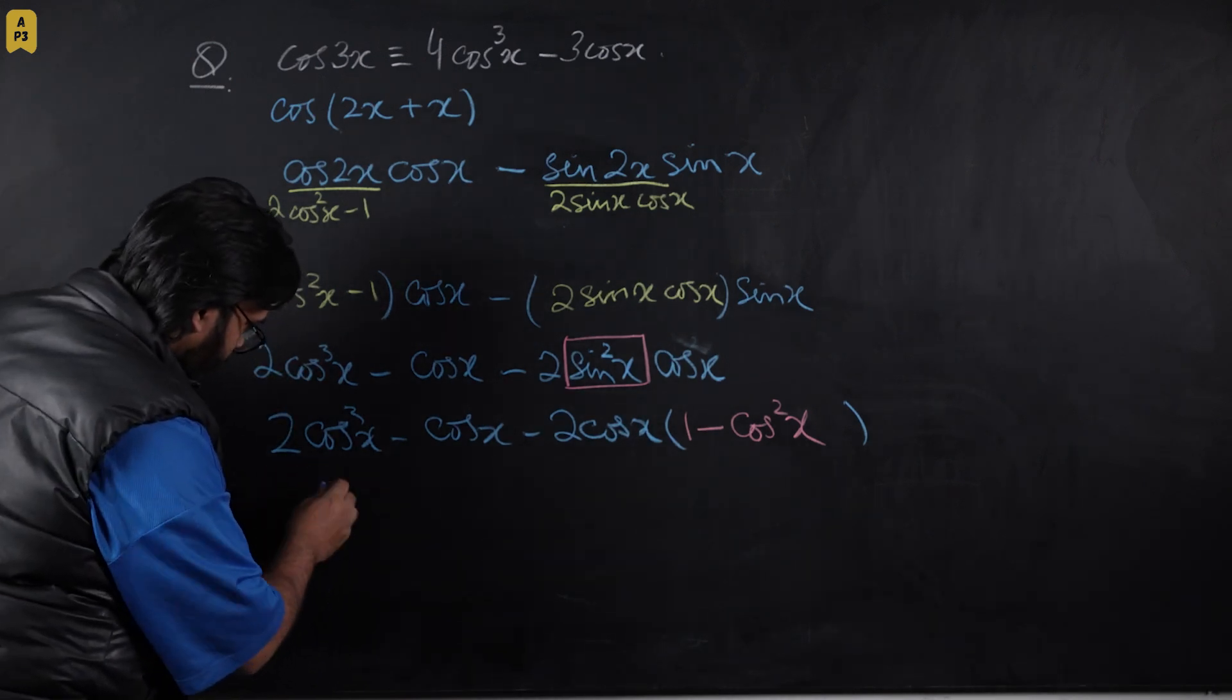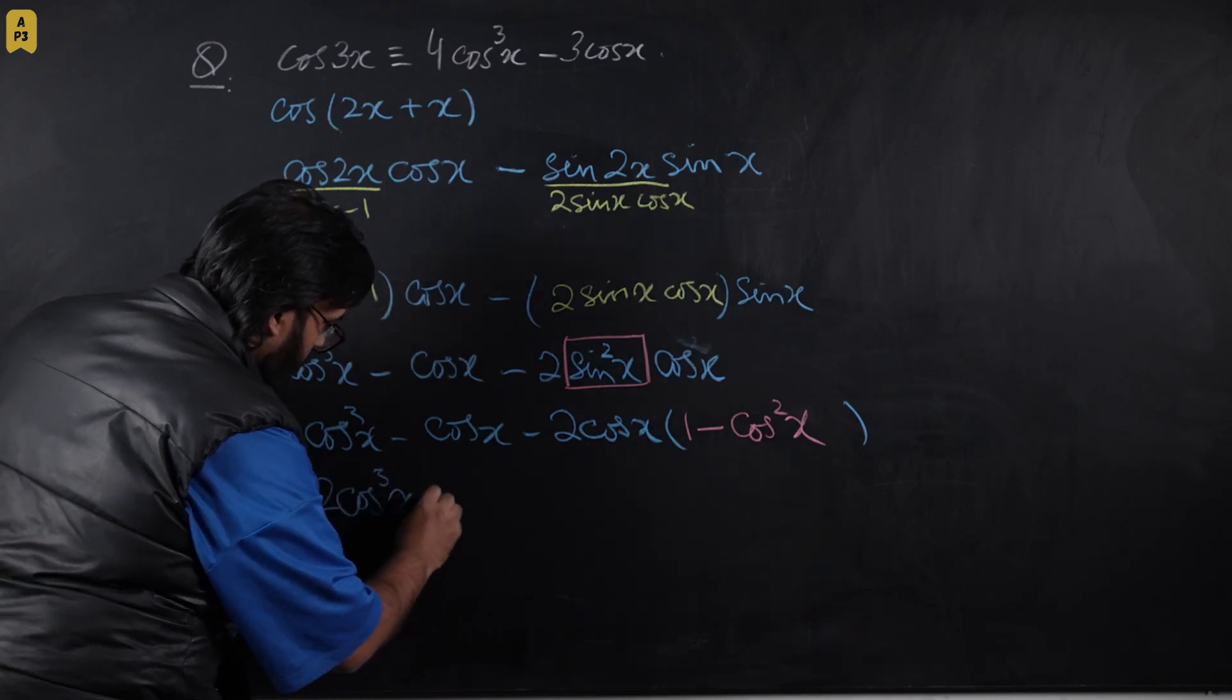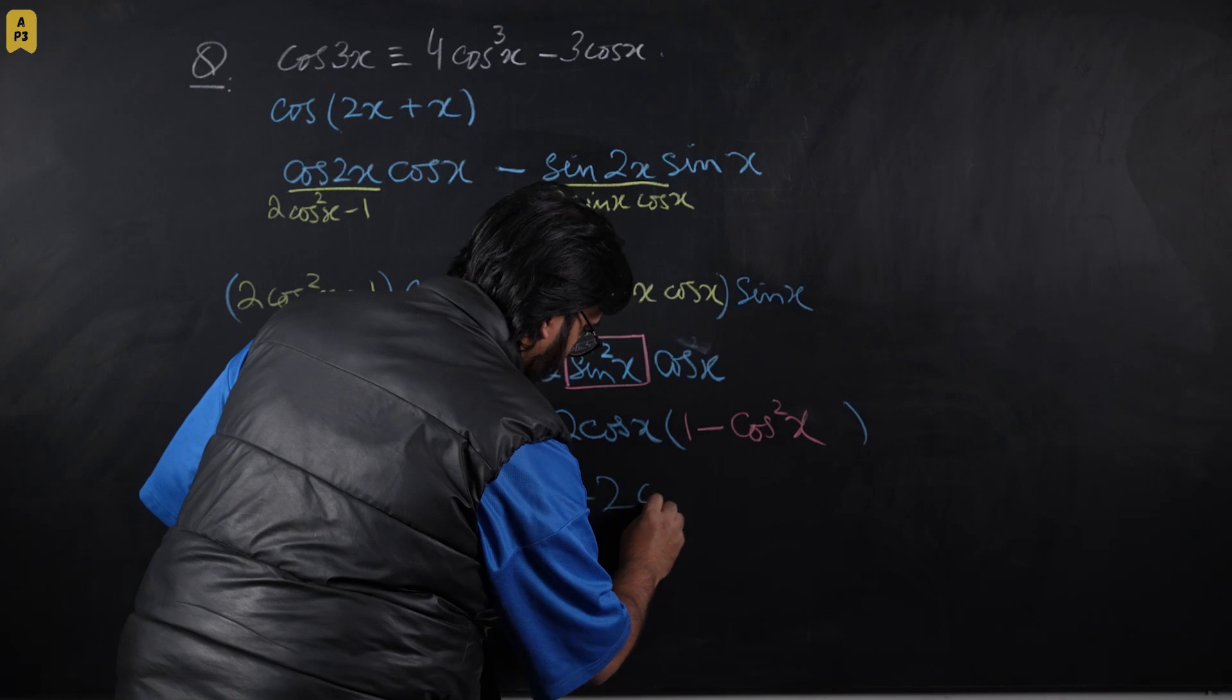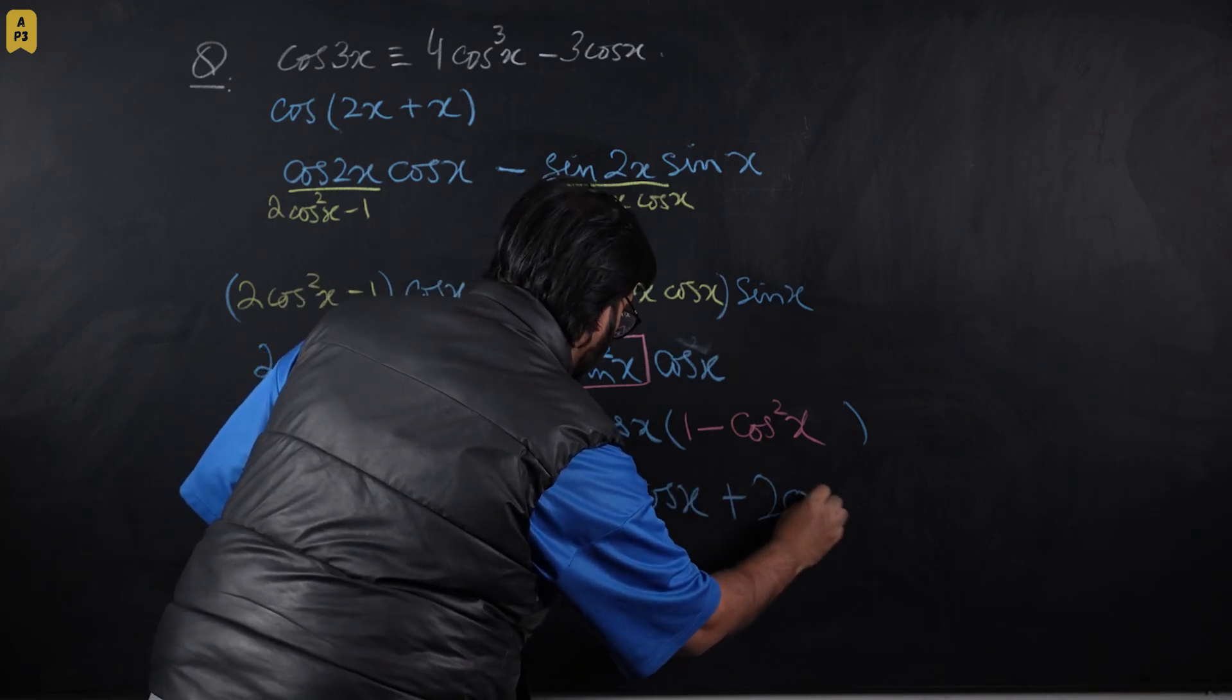This is 2cos³x - cos x - 2cos x + 2cos³x.